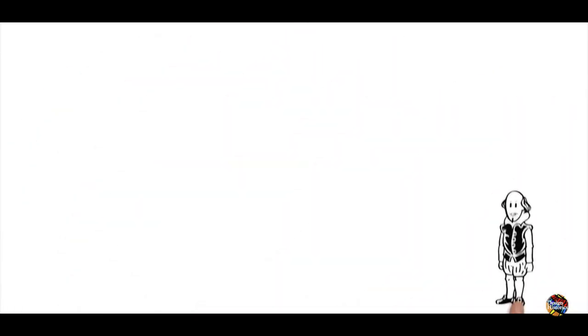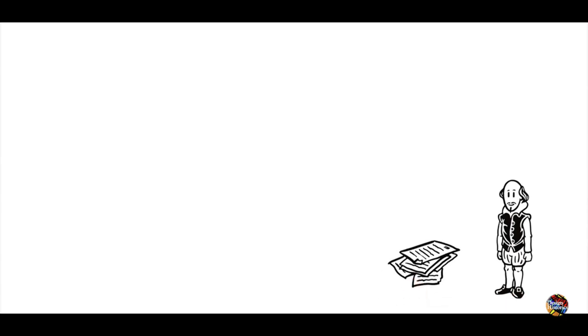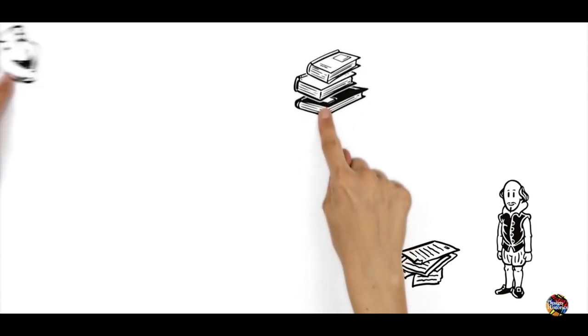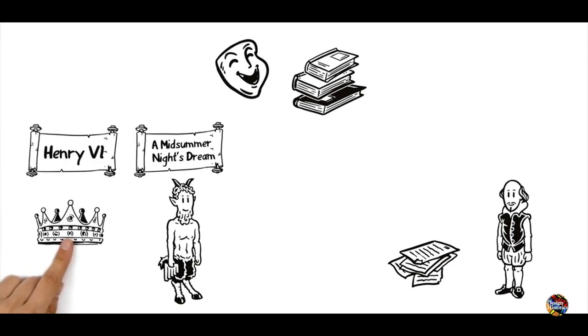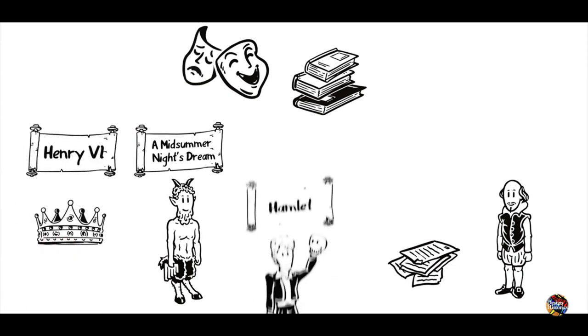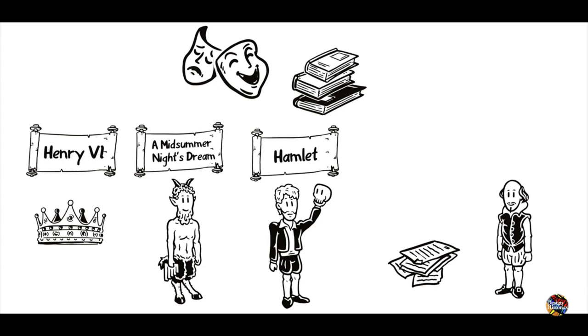Besides the plays, Shakespeare also wrote a multitude of sonnets and poems. At first his work consisted almost exclusively of histories and comedies, like A Midsummer Night's Dream and Henry VI. Later, tragedies like Hamlet also became part of his portfolio.